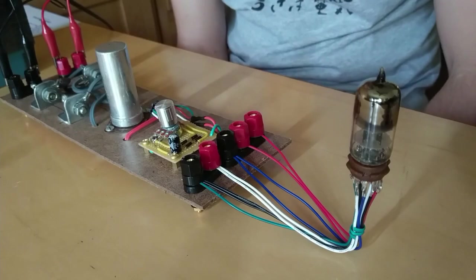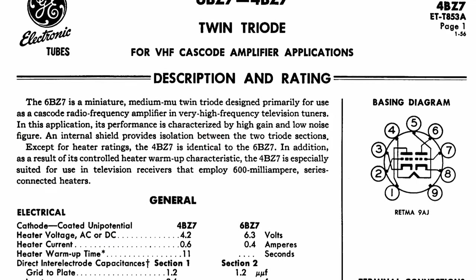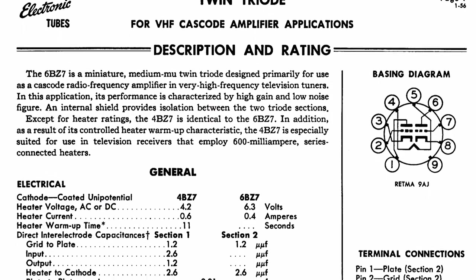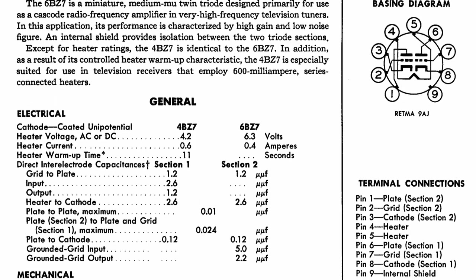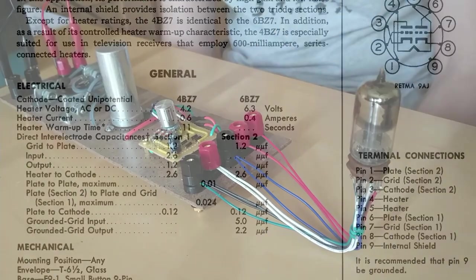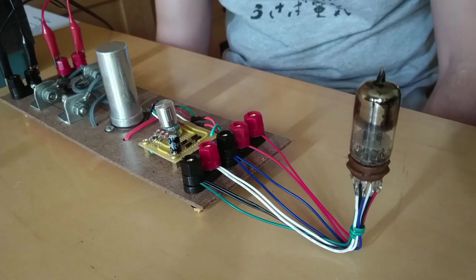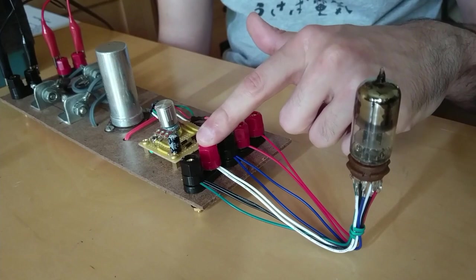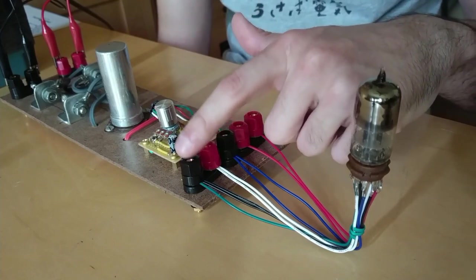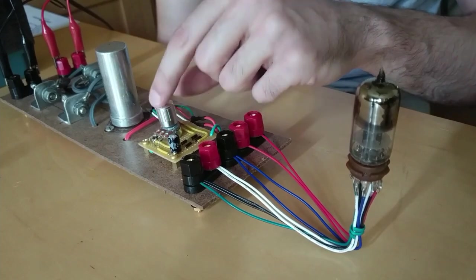All right. This is a 6BZ7. This is a nine pin dual triode. It's actually pin compatible with pretty much all six volt dual triodes like the 6DJ8 or the ECC88 or pretty much any of those. So there's two plates, two grids, two cathodes and an internal shield. And so we have the grids hooked up to our control here. We have our plates hooked up to our high voltage here, and we have our cathodes hooked up to ground here. And I've got this all the way turned down to negative eight volts. So let's turn it on and see what happens.